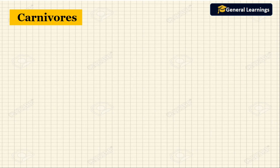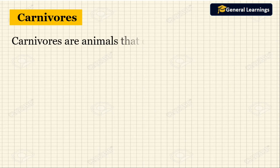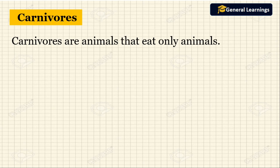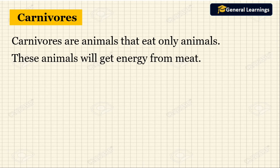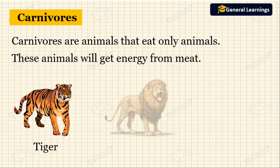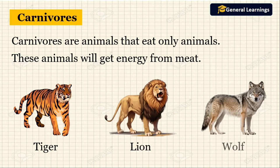Now we will see about carnivores. The animals which eat only other animals will be called carnivores. These animals get their energy and nutrition from meat. Examples of carnivores are tiger, lion, and wolf. These animals eat the flesh of other animals.